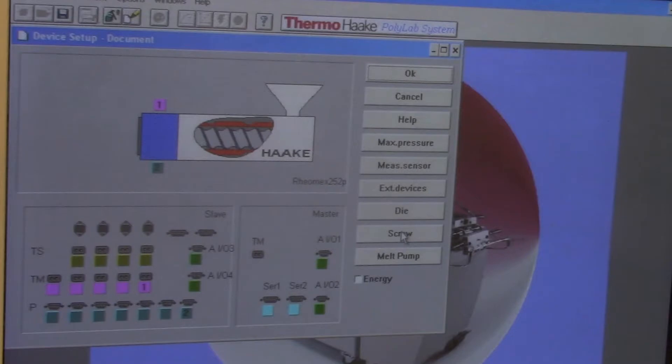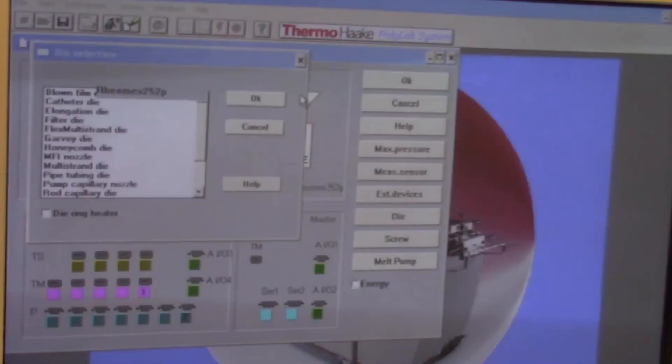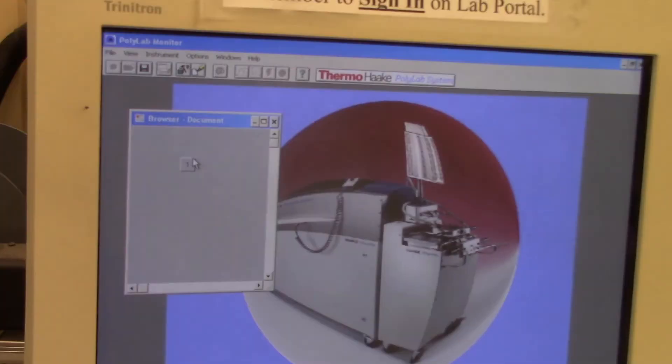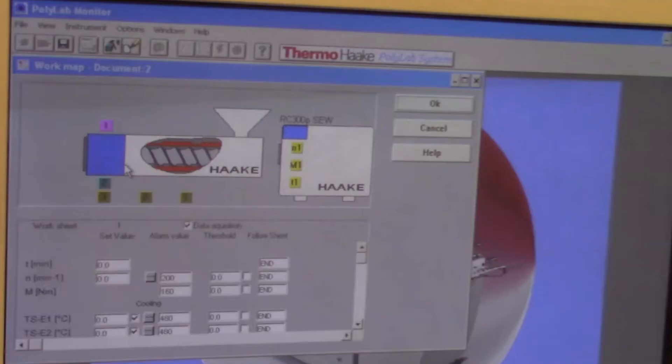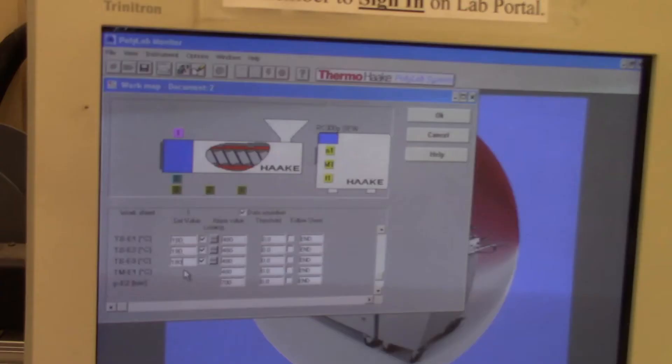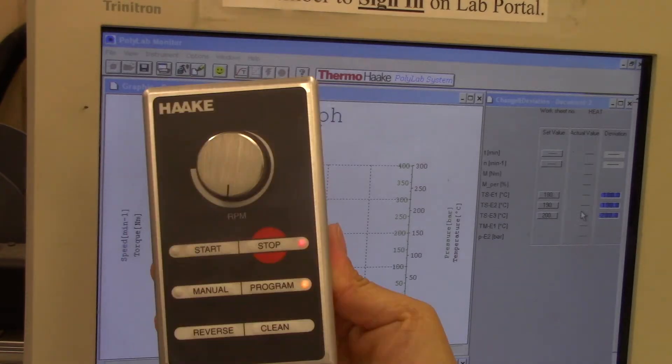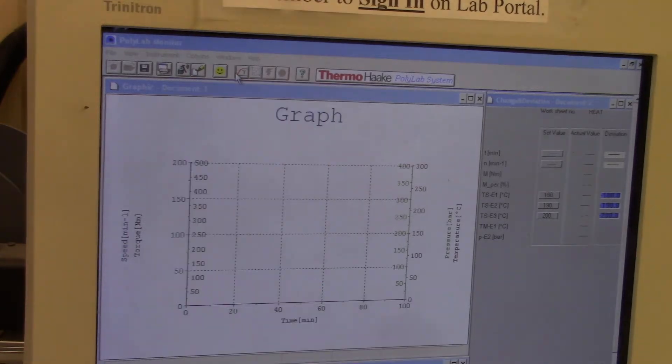We now select the characteristics of the screw, the length and diameter, the type of die we have, and we start to input the desired temperatures on the system. And we're ready to go. We can run it in manual or automatic mode. We're going to do it in automatic mode now.